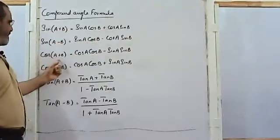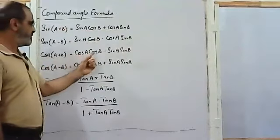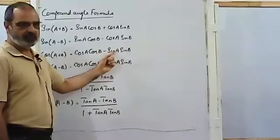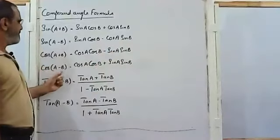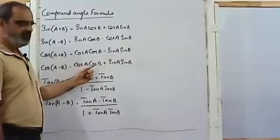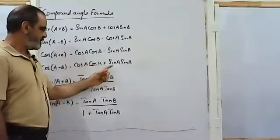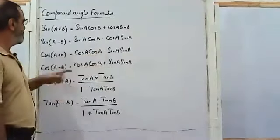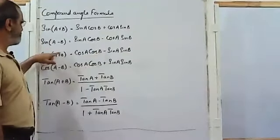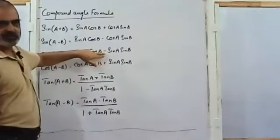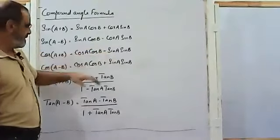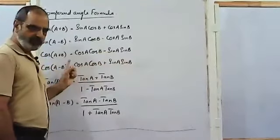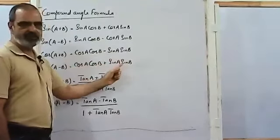Cosine of (A plus B) will be cos A cos B minus sin A sin B. The difference here is: for the addition of two angles we have a minus sign between the two terms, and in case of difference of two angles we have a plus sign between cos A cos B and sine A sine B.